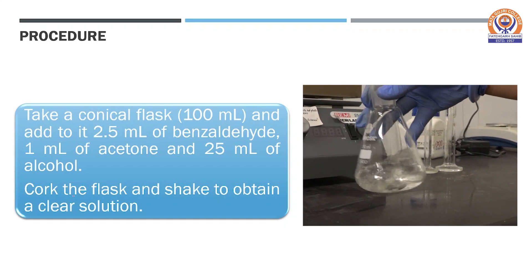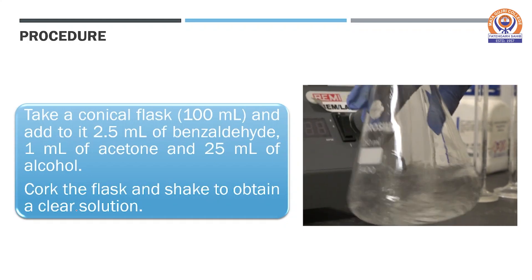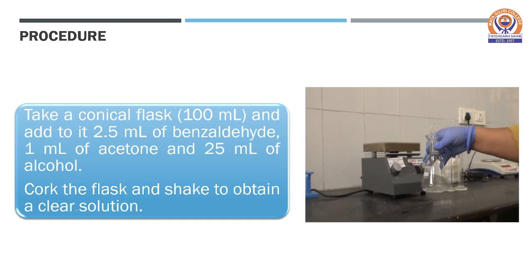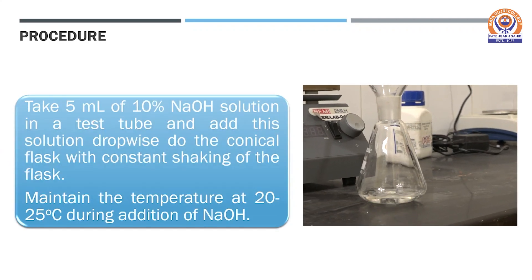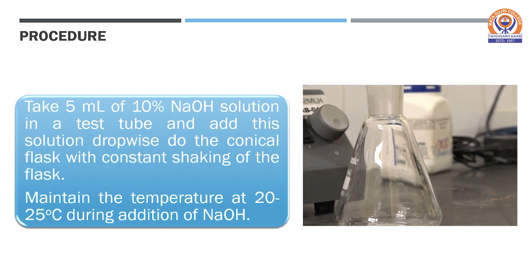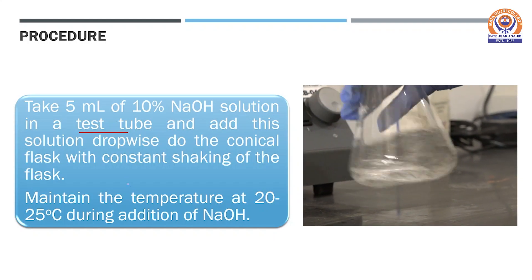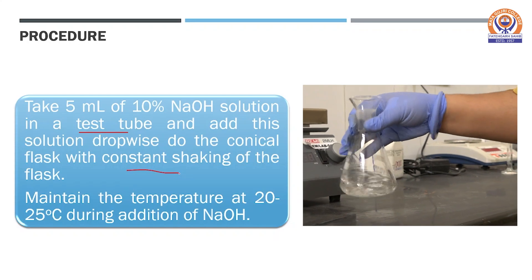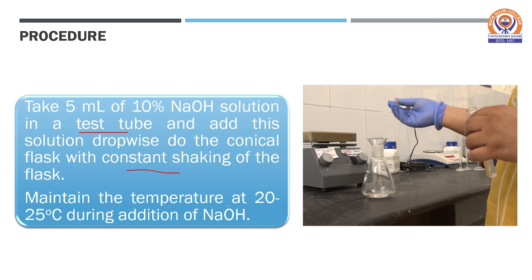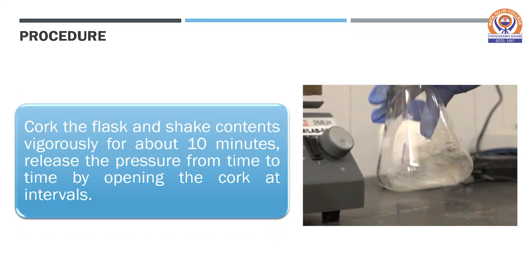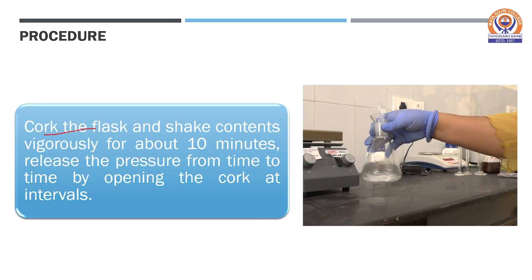Cork the flask and shake to obtain a clear solution. As you can see in the video, a clear solution is obtained. Next, take 5 ml of 10% NaOH solution in a test tube and add this solution dropwise to the conical flask with constant shaking during the addition. The temperature is to be maintained at 20 to 25 degrees centigrade. Then cork the flask again and shake the contents vigorously for about 10 minutes.